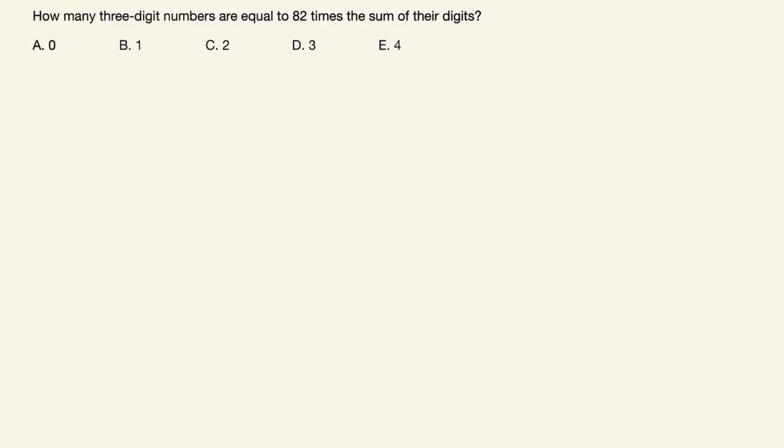We can write a three digit number ABC as 100A plus 10B plus C, and this must equal 82 times the sum of its digits A, B and C.